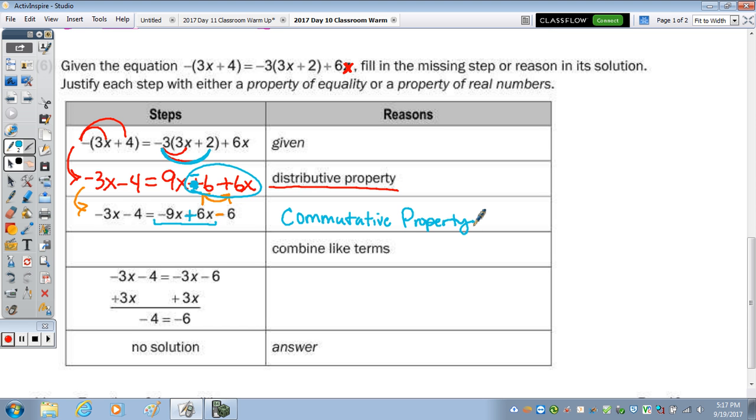To combine like terms, which it says to do in this step here, we just bring down the negative 3X minus 4, and then a negative 9X plus 6X is a negative 3X. Bring down the negative 6, and you can see this does match that. Good. And moving to the next step, they took this equation and they added 3X to both sides because the opposite of a negative 3X is a positive 3X. And the property that was used would be the addition property of equality.